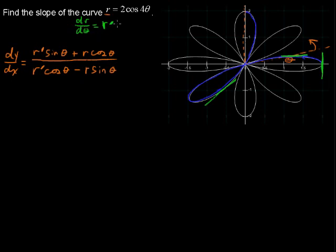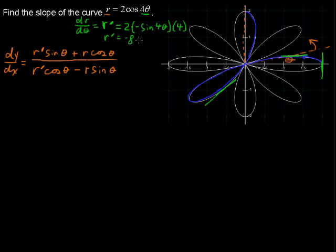dr/dθ is what I'm defining for r-prime. So r-prime equals — taking the derivative of 2 cosine 4 theta — we've got 2 times the derivative of cosine of 4 theta, which is negative sine of 4 theta, multiplied by the derivative of what's inside, so multiplied by 4. That's the chain rule. Ultimately, r-prime equals negative 8 sine of 4 theta. Don't try to multiply that 4 theta and distribute it with the negative 8 — that 4 theta is inside the sine function, so lock it in with parentheses.